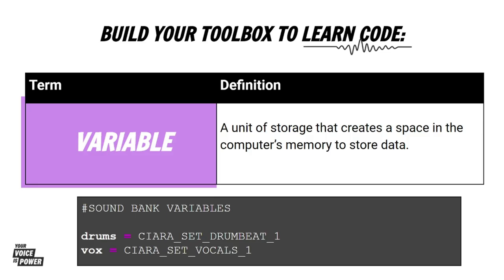Write down variable in your assignment document and let's think about why we should use variables. Not only can it save us from spelling mistakes, but I could also change the value of a variable pretty easily. So if I set up a particular drum beat and then change my mind, I don't have to go through the whole code and find that long name and change it — I can just change the value of my variable and it will update all throughout my song. Using variables is going to be so important for us.